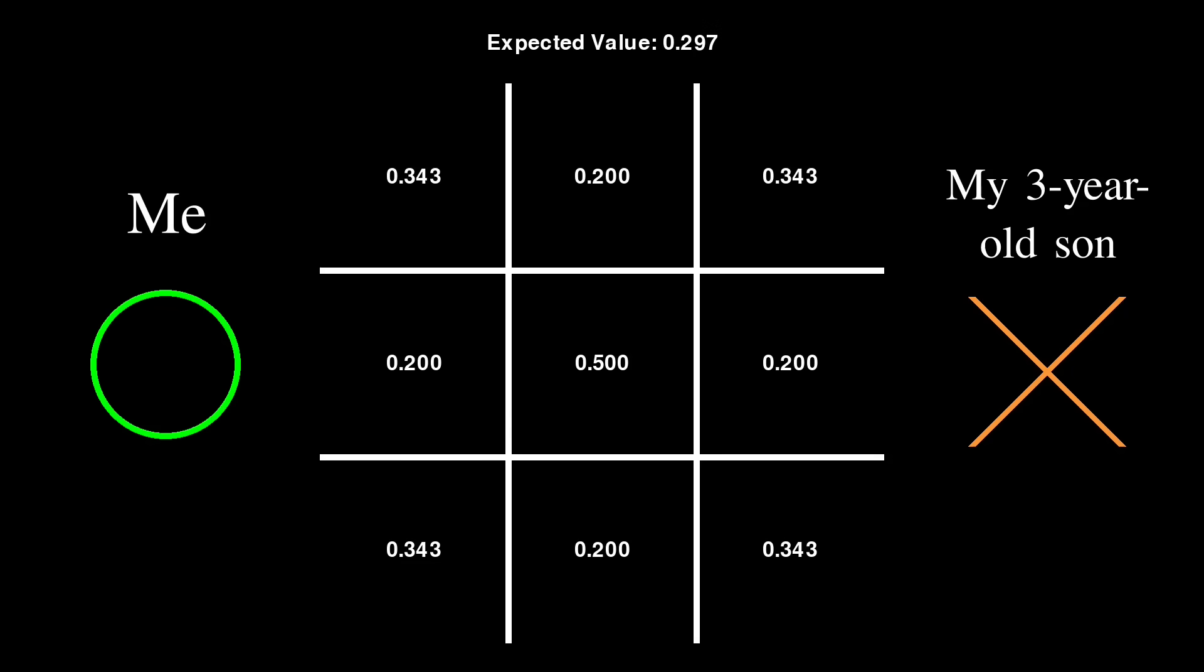Now, it didn't always go down this way. Here's another game, this time in which he went first. He started in the upper edge, and I responded with the opposite edge, yielding an expected value of 0.37.